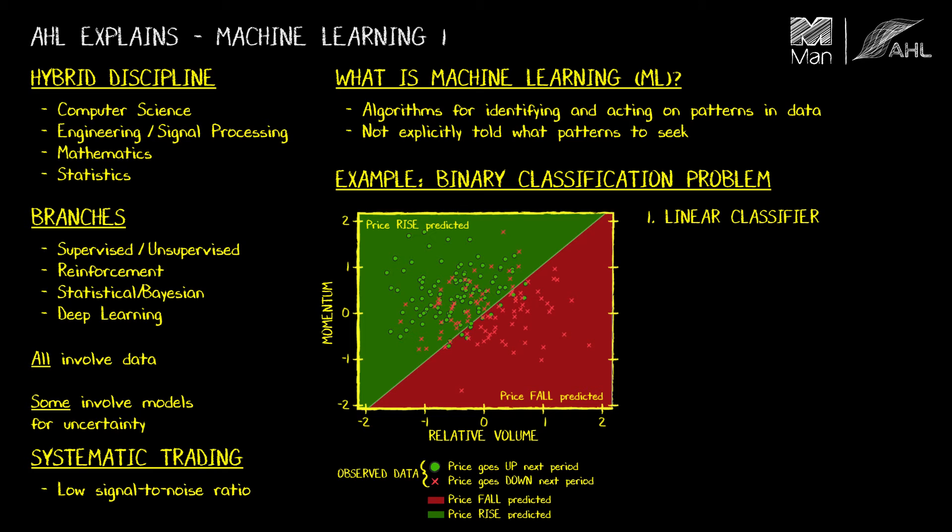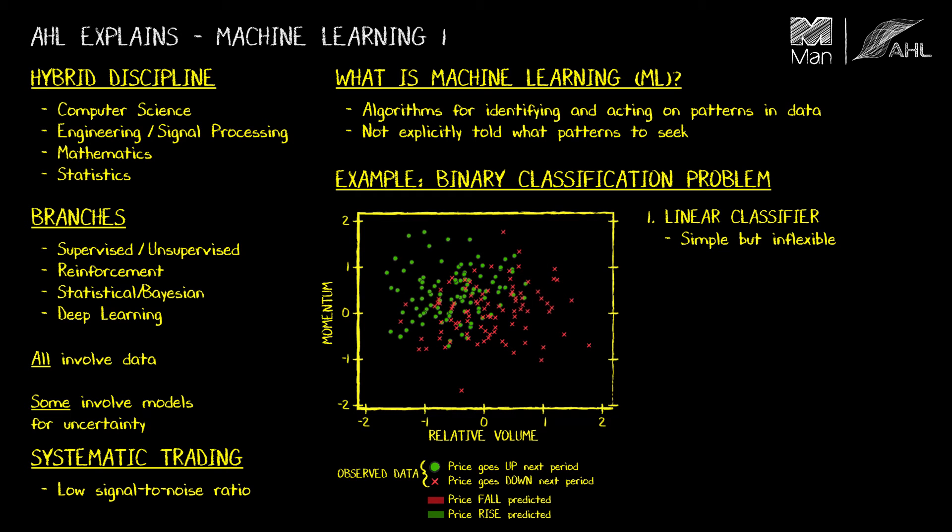We'll start with a linear classifier. Here, the decision boundary, that is the line between the red and the green shading, is assumed to be a straight line. Fitting that straight line, we end up with this. Now, this is a very simple approach, but it's also very inflexible. And in general, there is no reason to assume that a straight line is the correct form for that boundary.